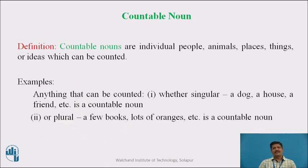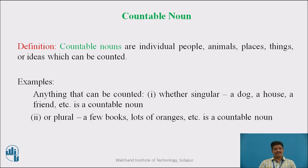The next category is Countable Noun. Countable nouns are individual people, animals, places, things, or ideas which can be counted. Anything that can be counted — whether singular, such as a dog, a house, a friend, or plural, such as a few books or lots of oranges — is a countable noun.